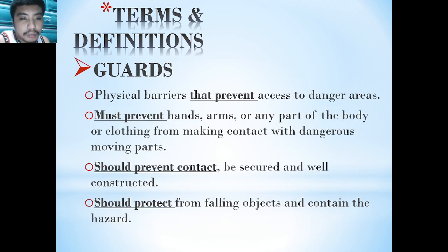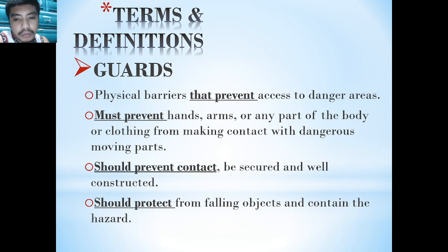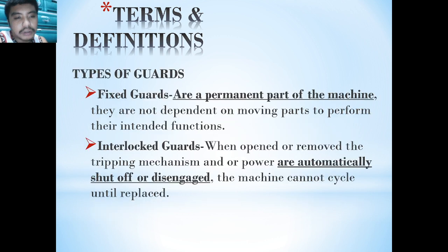Guards are physical barriers that prevent access to danger areas. They must prevent entry to arms or any part of the body, prevent contact, be secure and well-constructed, protect from falling objects, and contain the hazard. Types of guards include fixed guards, which are permanent parts of the machine.